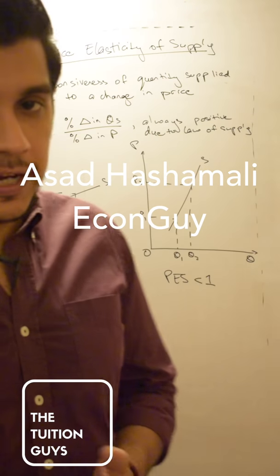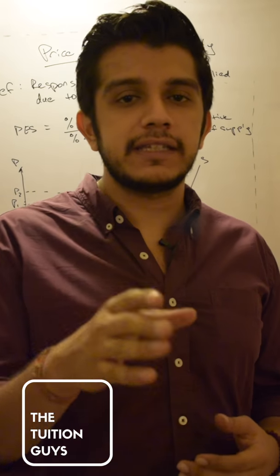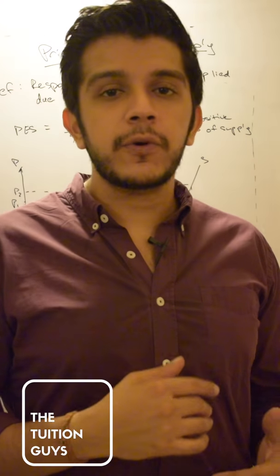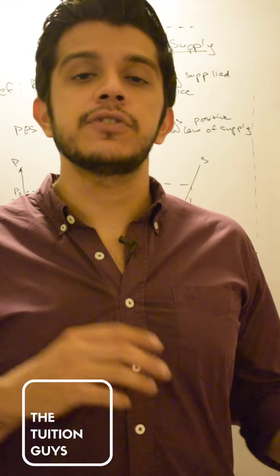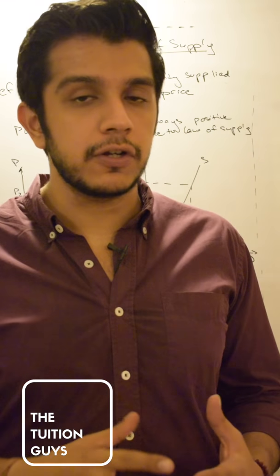What's up guys, it's econ time. In the last class we spoke about price elasticity of demand. Now we're going to talk about price elasticity of supply, which is fairly the same concept, but in demand we're talking about the consumer. With supply, we talk more about the producer, the quantity supplied aspect of everything.